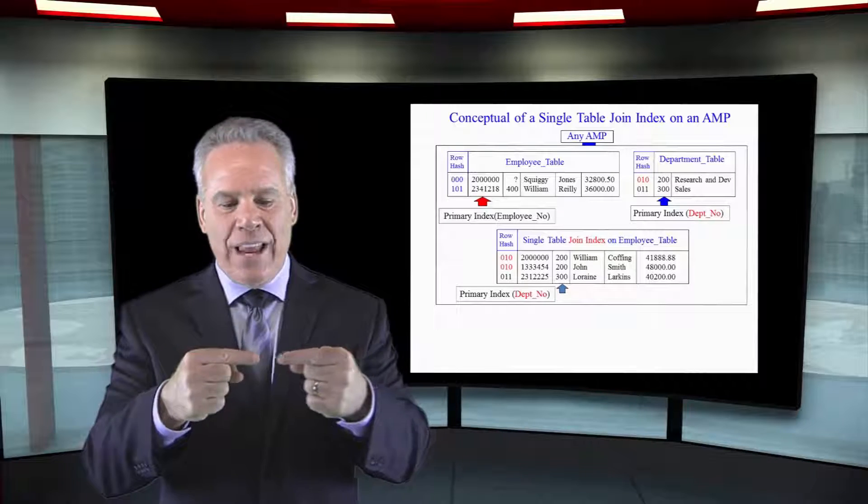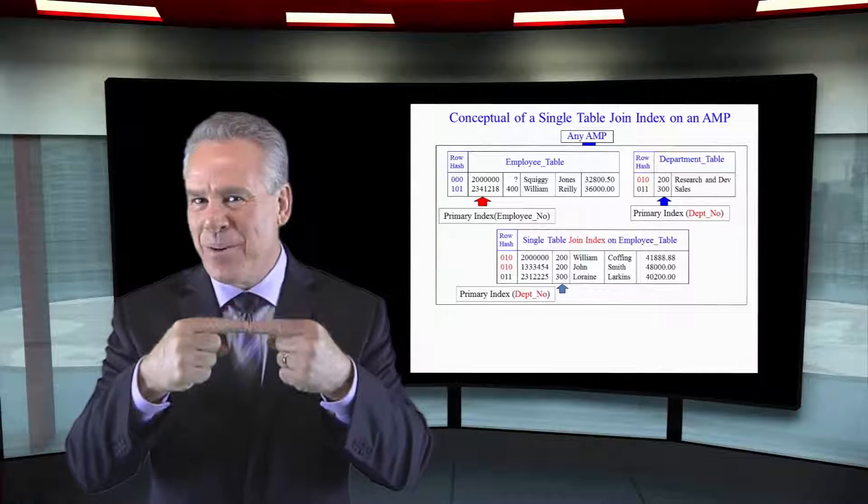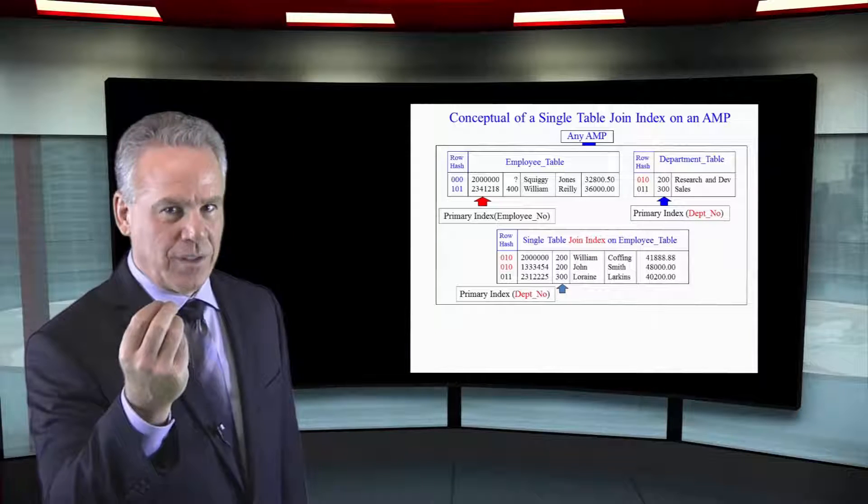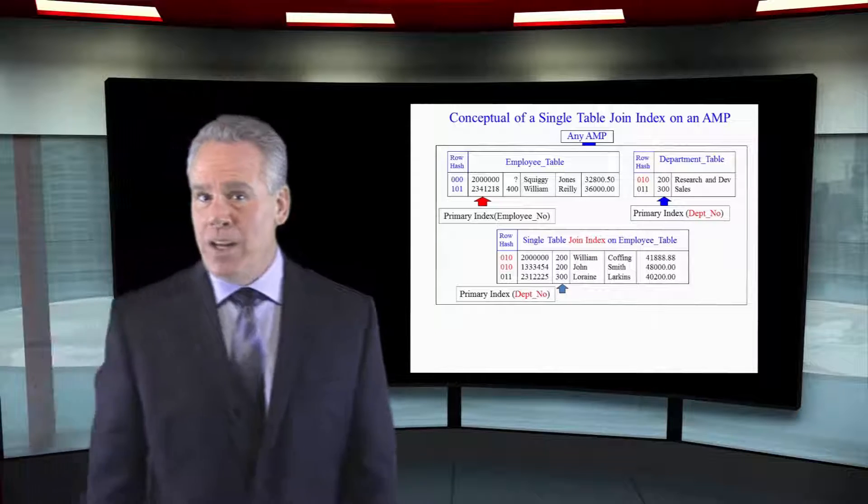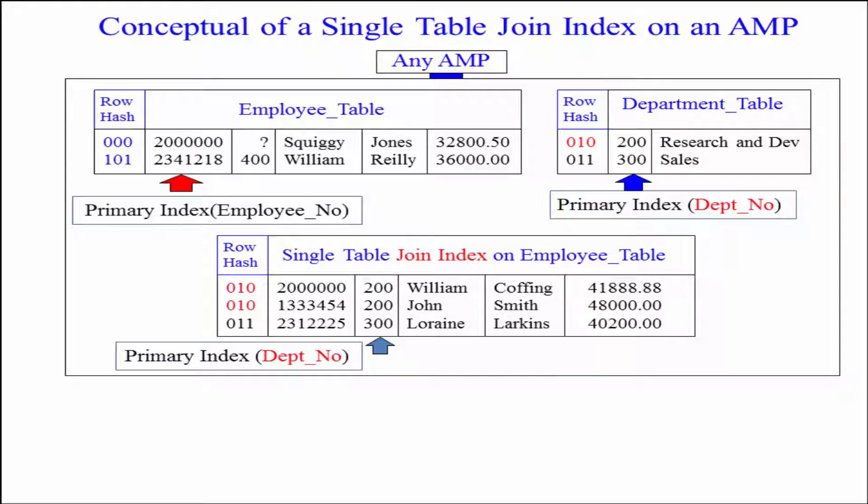And for two rows to join, they have to be on the same AMP in the same memory. So, the join index serves two purposes. It's a single table join index where we made the primary index DEPNO.